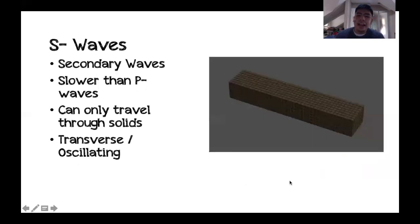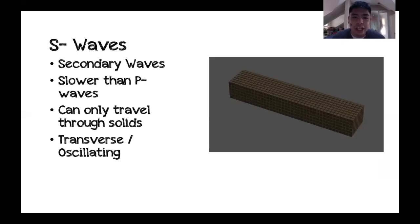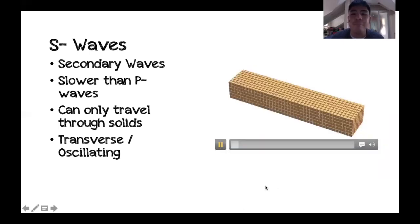S waves — or secondary waves — are the second waves picked up by seismograph stations. They are slower than P waves and can only travel through solids. Their direction of movement is transverse or oscillating.